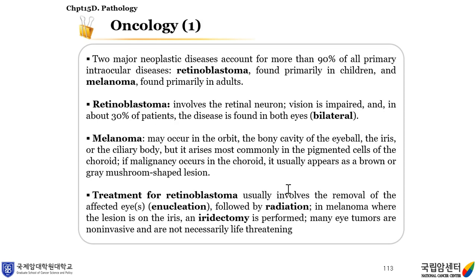Oncology. Two major neoplastic diseases account for more than 94% of all primary intraocular diseases: retinoblastoma, found primarily in children, and melanoma, found primarily in adults. Retinoblastoma involves the retinal neurons; vision is impaired, and in about 30% of patients the disease is found in both eyes bilaterally. Melanoma may occur in the orbit. The treatment for retinoblastoma usually involves removal of the affected eye — enucleation — followed by radiation. In melanoma where the lesion is on the iris, an iridectomy is performed. Many eye tumors are non-invasive and are not necessarily life-threatening.